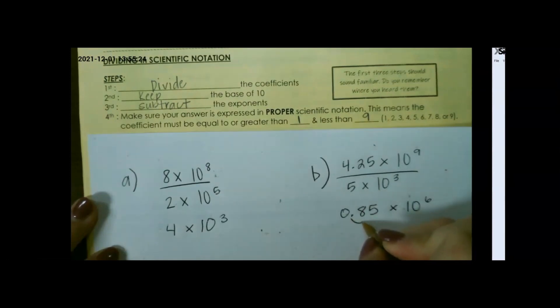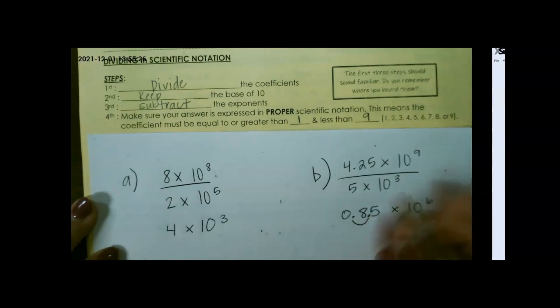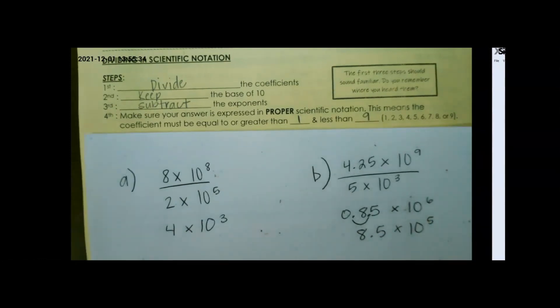So I'm going to move my decimal to the right one place to make this 8.5. If we move our decimal to the right, that makes our exponent smaller. So that would be our final answer.